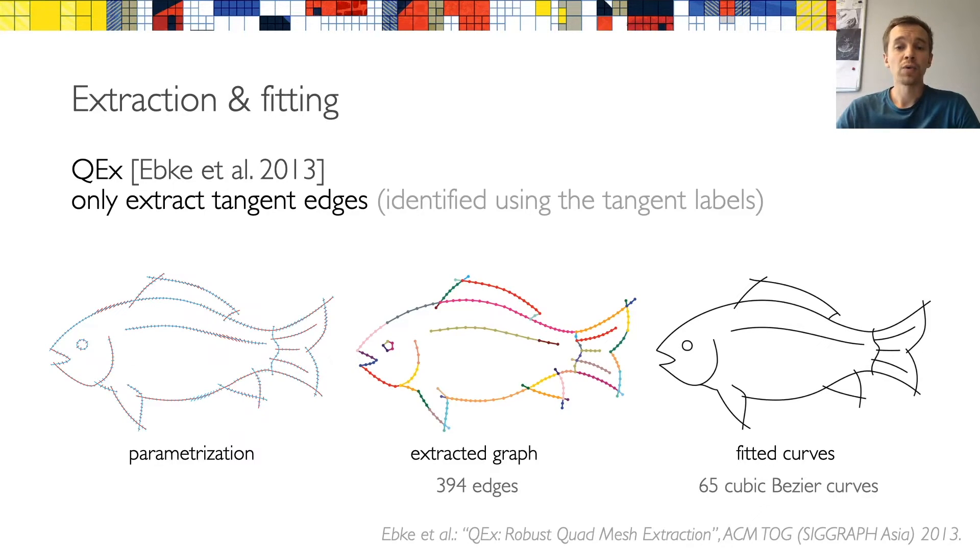When the parameterization is computed, the last step of our algorithm is the extraction. And here we adapt the QEx algorithm of Ebke and colleagues, which maps the grid iso lines back to the sketch space using the parameterization inverse. The difference with respect to QEx is that we are only interested in extracting the edges and not the quads. Moreover, we only trace edges in the tangent direction, which we identify using the tangent labels computed for the snapping term. The output of this step is a topological graph, to which we fit a network of cubic Bezier curves.